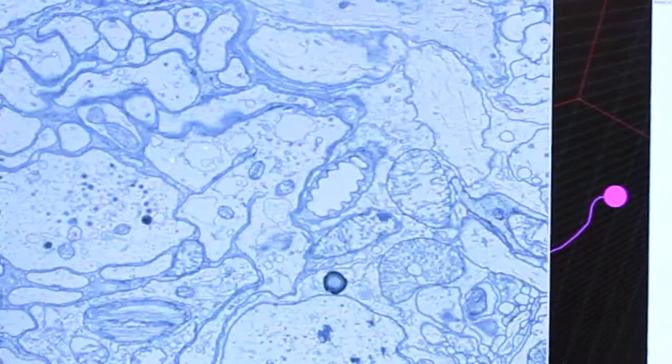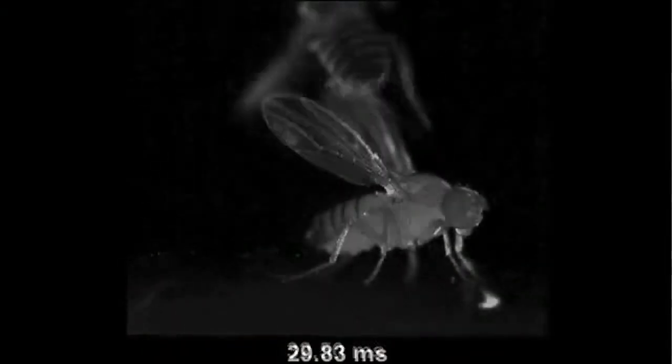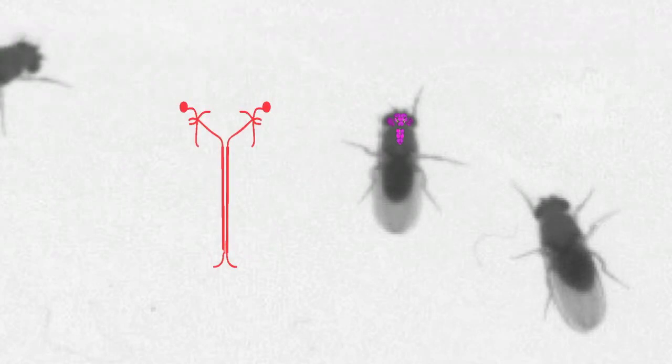We've traced back the decision for a fly to make a short escape versus a long escape to a single action potential in a single neuron that connects the fly's brain to the equivalent of its spinal cord, its ventral nerve cord.